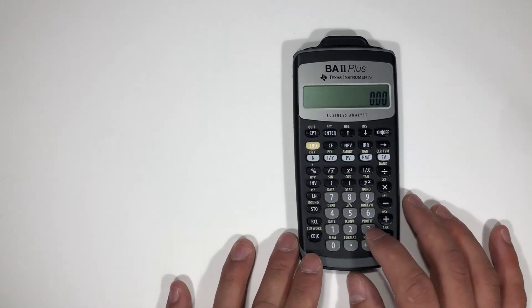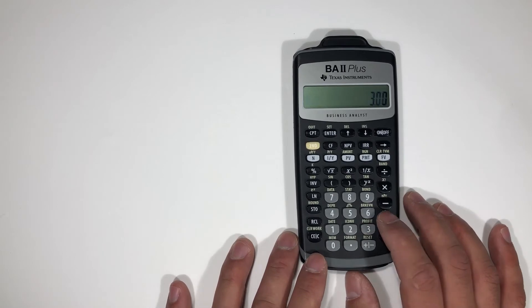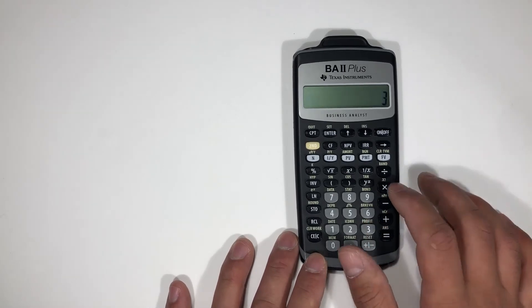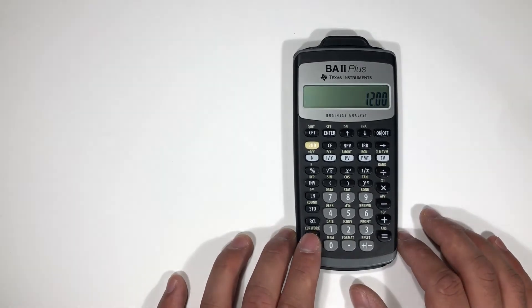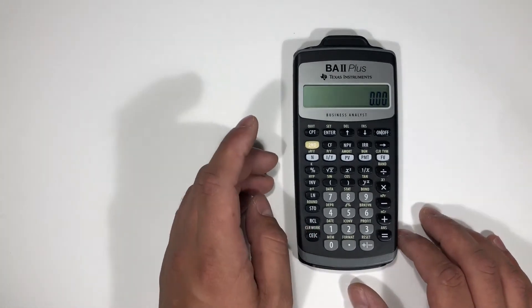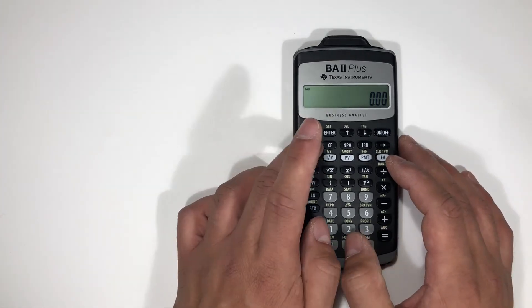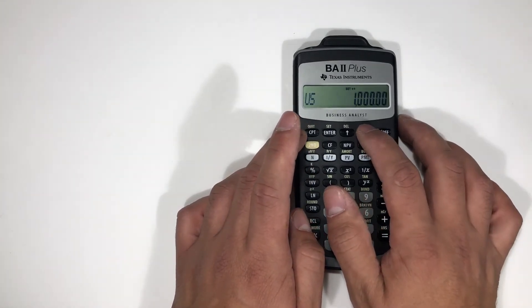We're going to go 3 plus 3 times 2. Okay, that's 12. So now let's switch format, let's change this from chain to AOS.